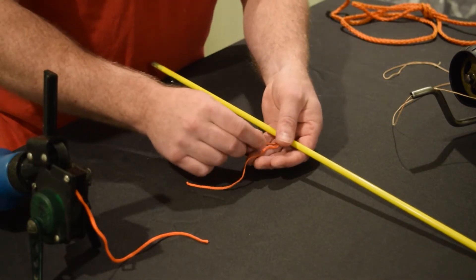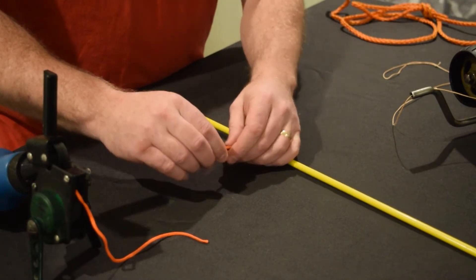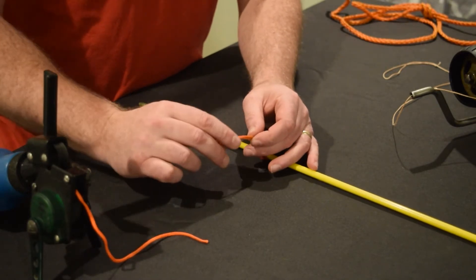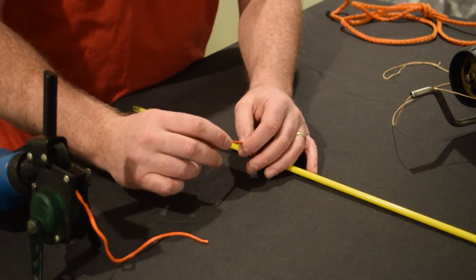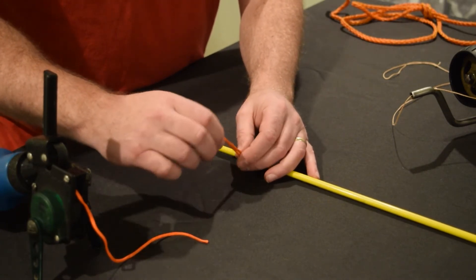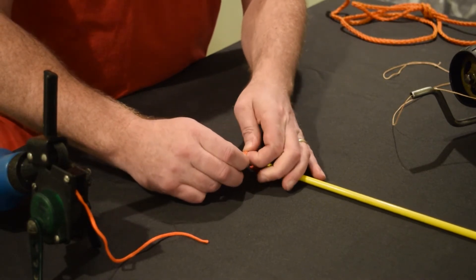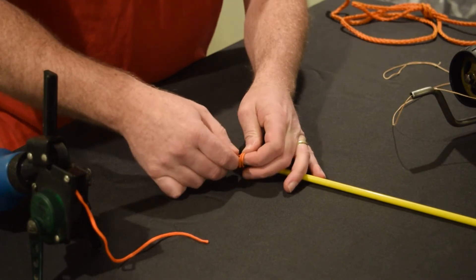Then I'm going to pull the line through until the ends match, and I'm going to tie another basic overhand knot. The size of this loop isn't that critical. So I'm just going to wrap this around, pass both of the tag ends through the hole, and then pull tight.